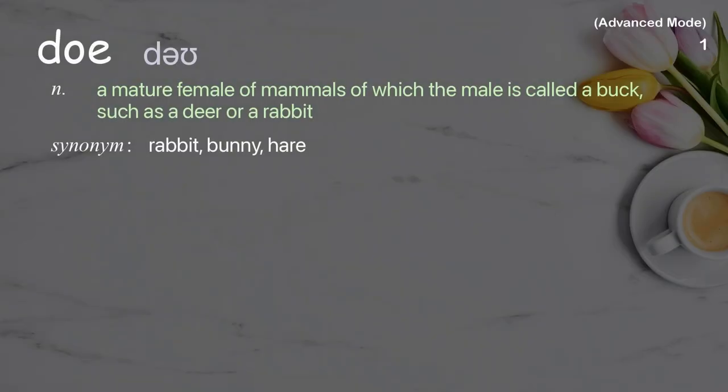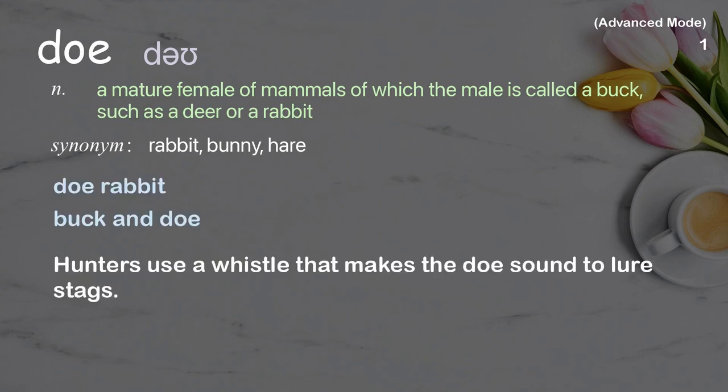Doe: a mature female of mammals of which the male is called a buck, such as a deer or a rabbit. Examples: doe rabbit; buck and doe. Hunters use a whistle that makes the doe sound to lure stags.